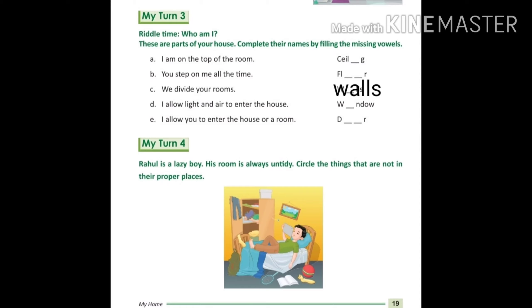I allow light and air to enter the house or a room. What is it that allows entry into the house or into the room? It gives permission. Door. Door means darwaza.